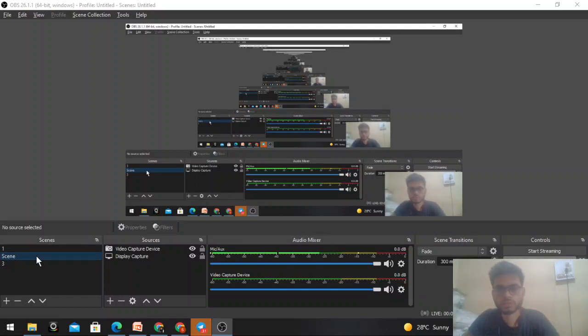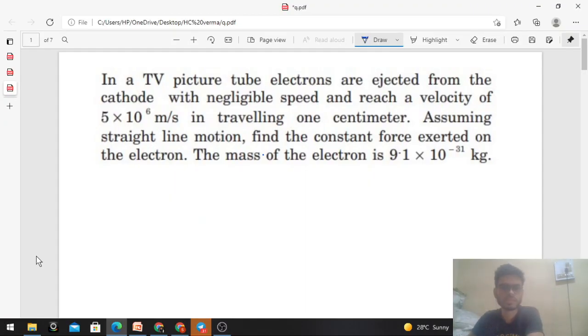Okay, hi everyone. Today we will discuss this problem from HC Verma - a straightforward problem. In a TV picture tube, electrons are ejected from the cathode with negligible speed and reach a velocity of 5×10^6 m/s in traveling 1 centimeter. Assuming straight line motion, find the constant force exerted on the electron. The mass of the electron is 9.1×10^-31 kg.